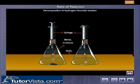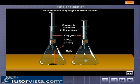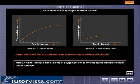As the reaction proceeds, the oxygen gas formed collects in the syringe. A graph of volume against time is plotted for the two flasks, A and B.